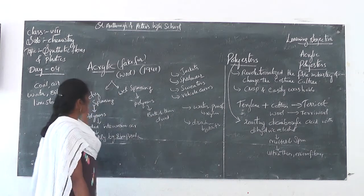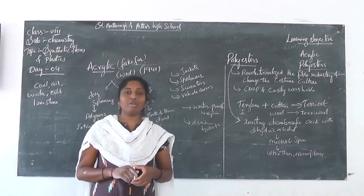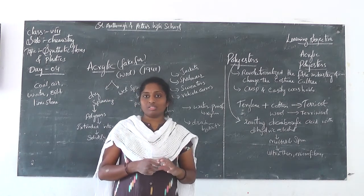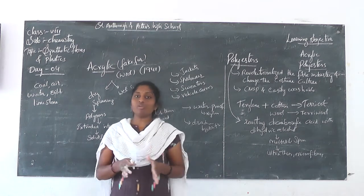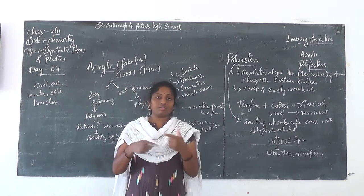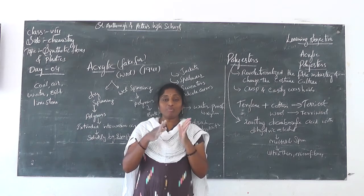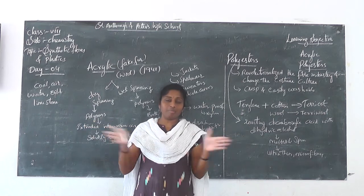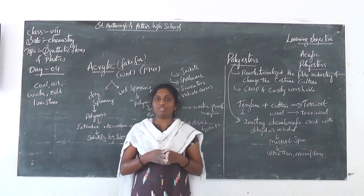Let us talk about acrylic. In the winter season, what type of fiber we will be selecting? It is wool — we will select woolen clothes. But if you want woolen clothes for one person, it is possible. Yes, for you it is possible, because from one sheep you can take the wool and make woolen fiber and use it. But if you want the same natural wool for so many people — a large number of people — is it possible? No, it is not at all possible.